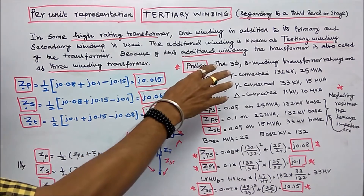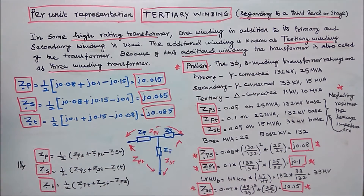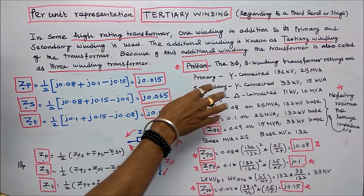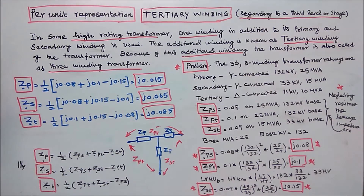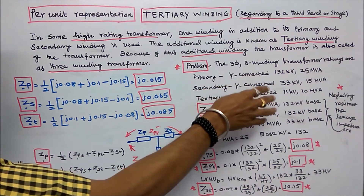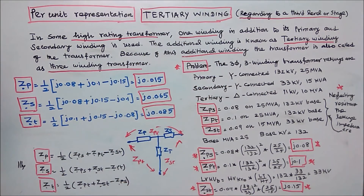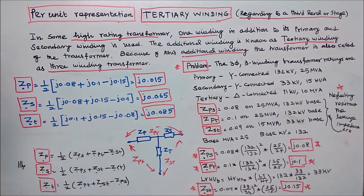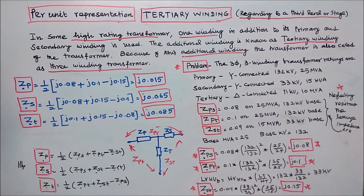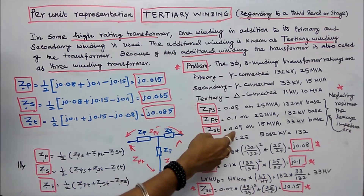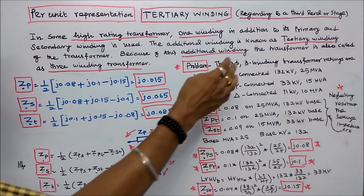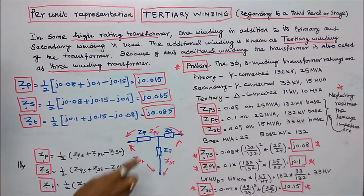Now we will work out one problem. A three phase three winding transformer has ratings: primary — star connected, 132 kV, 25 MVA; secondary — star connected, 33 kV, 15 MVA; tertiary winding — delta connected, 11 kV, 10 MVA. Neglecting resistance, the leakage impedances are: Zps = j0.08 on a 25 MVA, 132 kV base; Zpt = j0.1 on a 25 MVA, 132 kV base; Zst = j0.09 on a 15 MVA, 33 kV base. We choose base MVA = 25, base kV = 132.